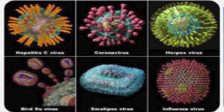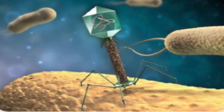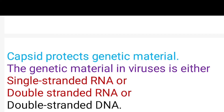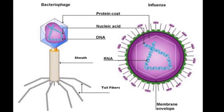As per the genetic material, viruses are grouped as DNA viruses or RNA viruses. The protein coat is called a capsid, which is made up of smaller units called capsomers. Capsomers are arranged in polyhedral or helical form. The capsid protects the genetic material. The genetic material in viruses is either DNA or RNA. RNA may be single-stranded or double-stranded. DNA viruses typically have double-stranded DNA. Viruses that infect bacterial cells are called bacteriophages, which normally have double-stranded DNA.